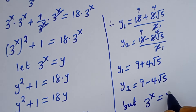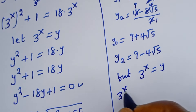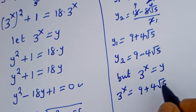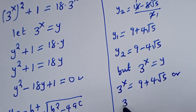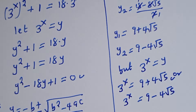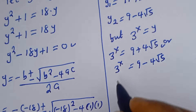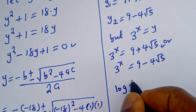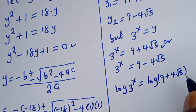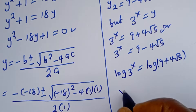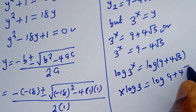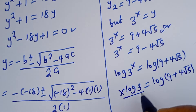But since 3 to the power of s is equal to y, then 3 to the power of s is equal to 9 plus 4 root 5, or 3 to the power of s is equal to 9 minus 4 root 5. From here, let's take the log of both sides. So s times log 3 is equal to log of 9 plus 4 root 5. Let's divide both sides by log 3.